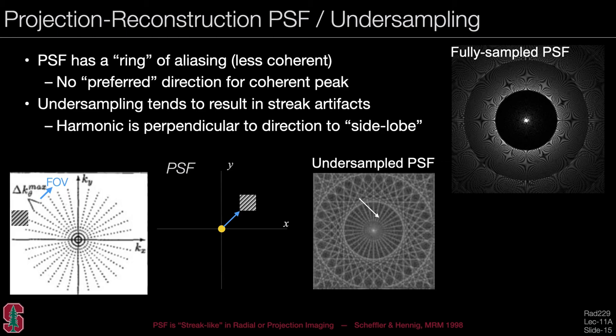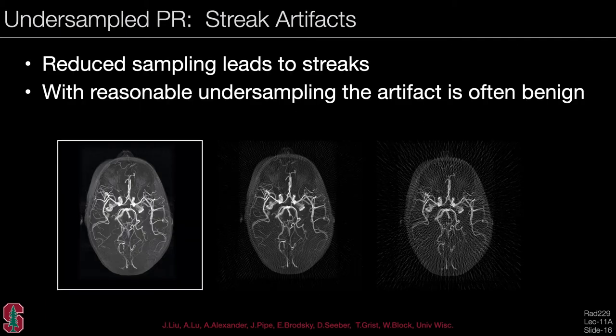What matters is the distance of the PSF spokes from the center. With increasing undersampling rates, streak artifacts increase in the images. However, at reasonable undersampling rates the artifact is often quite benign — even at moderate undersampling, vessels and structures can still be seen clearly, though quality begins to degrade.